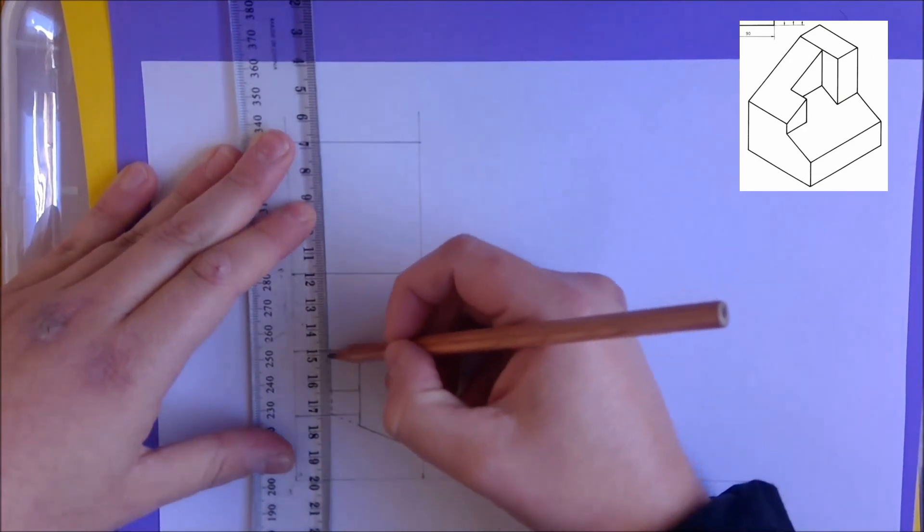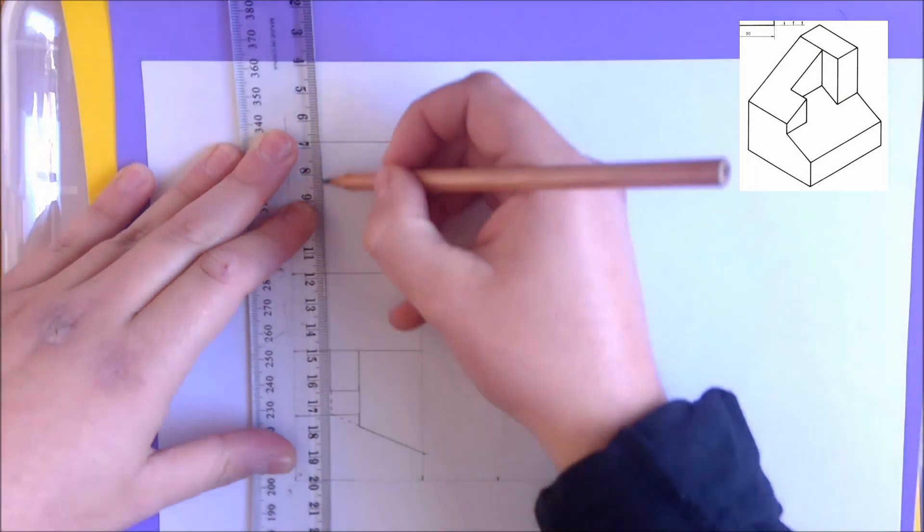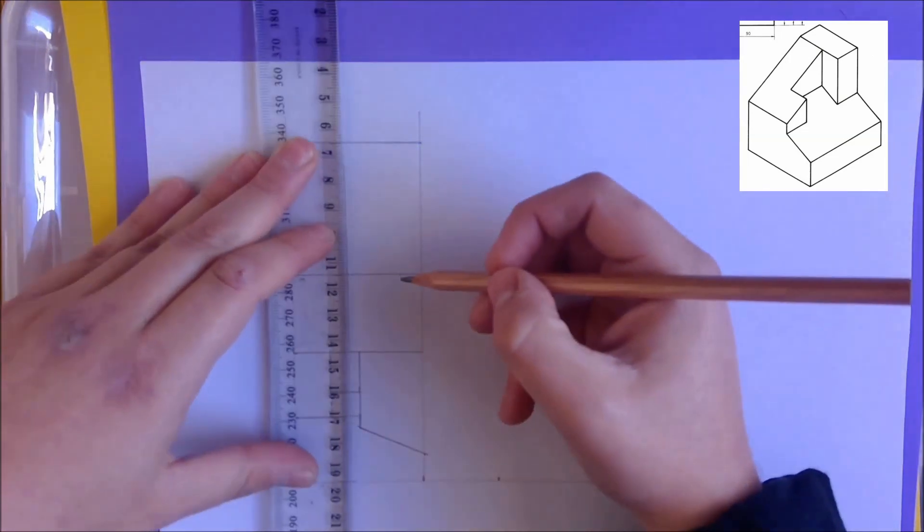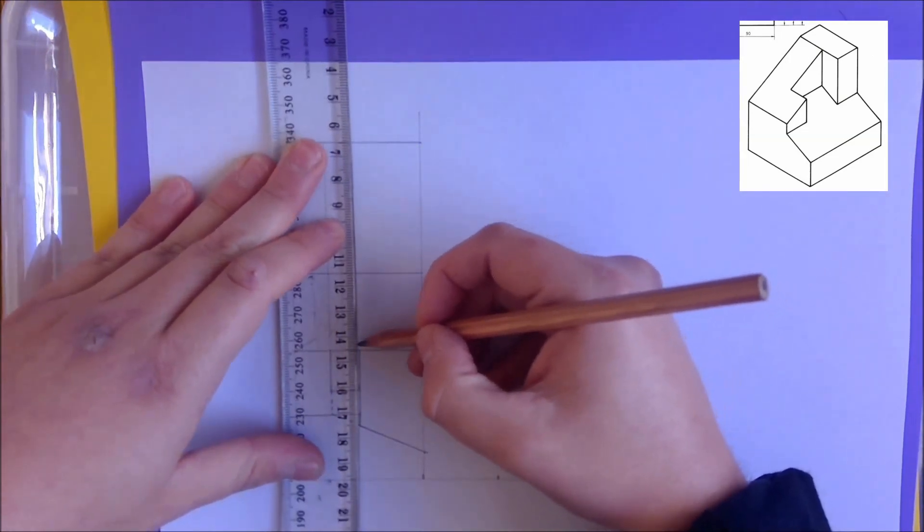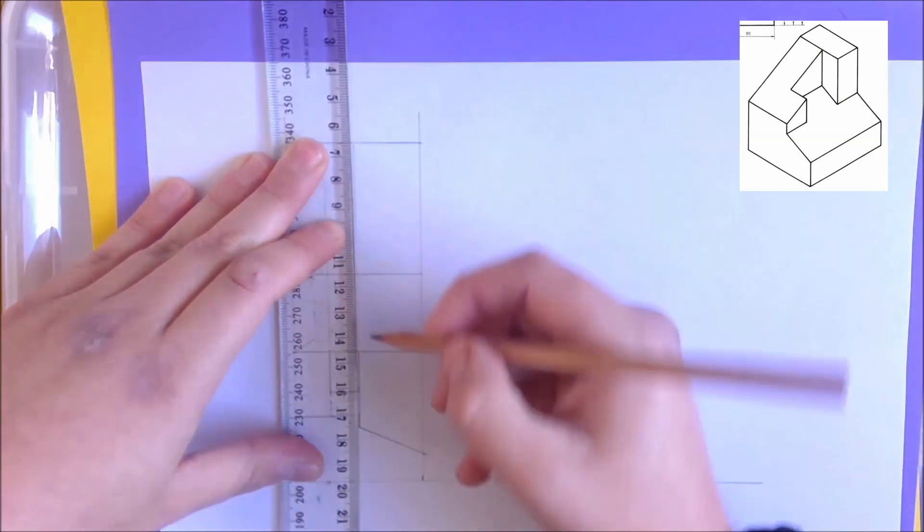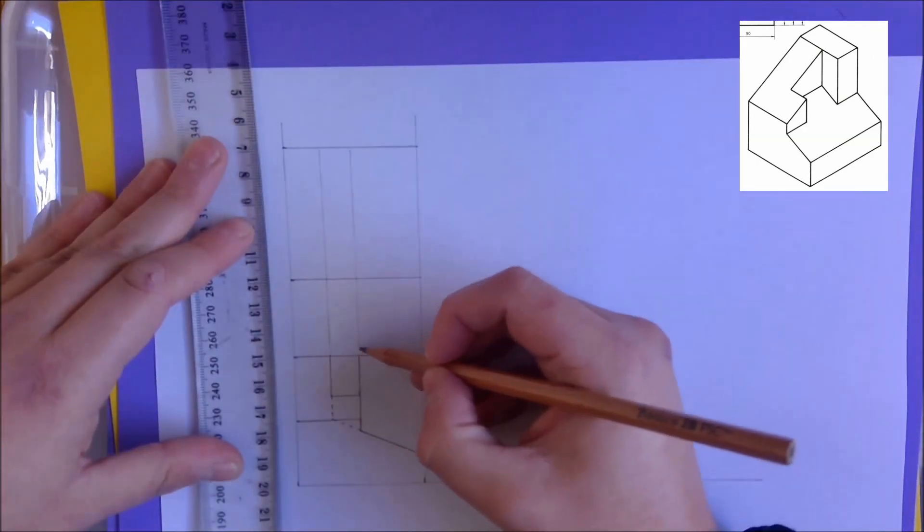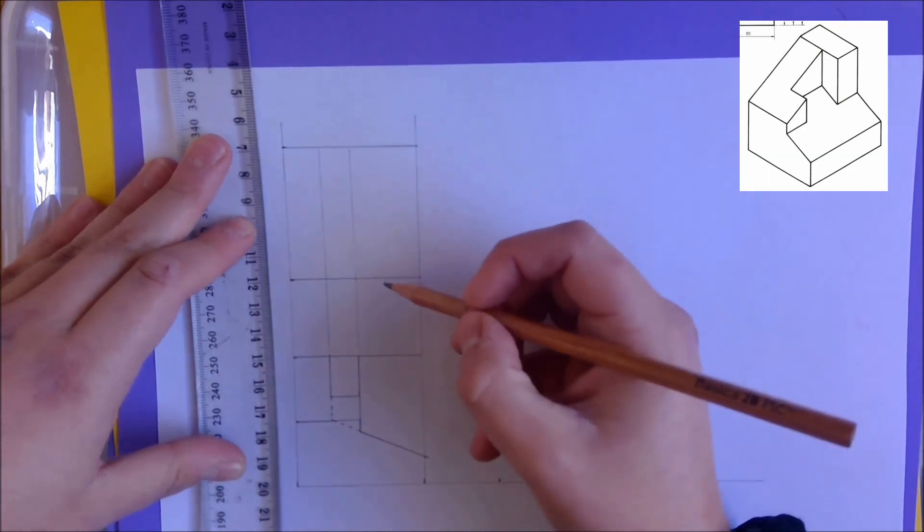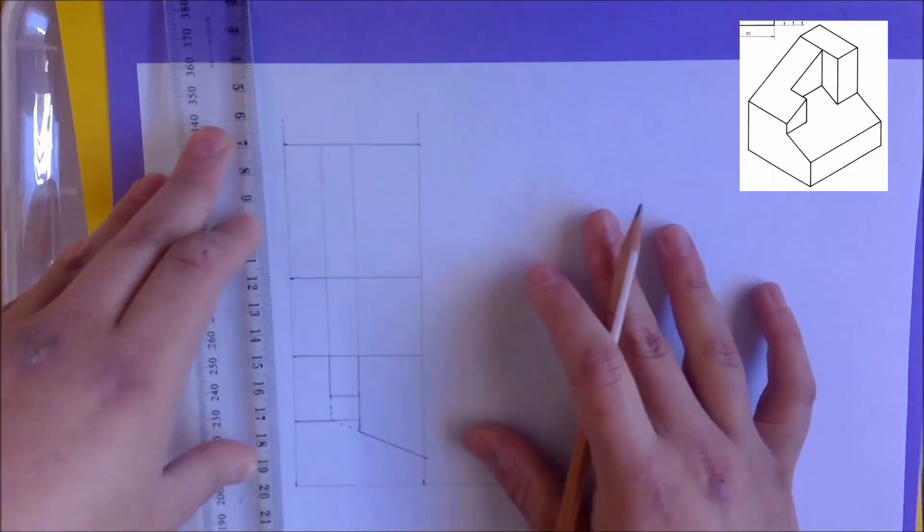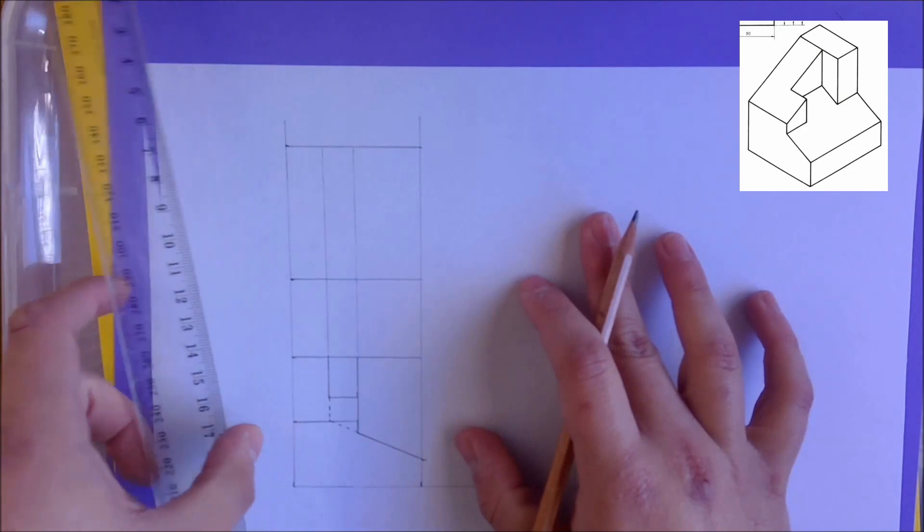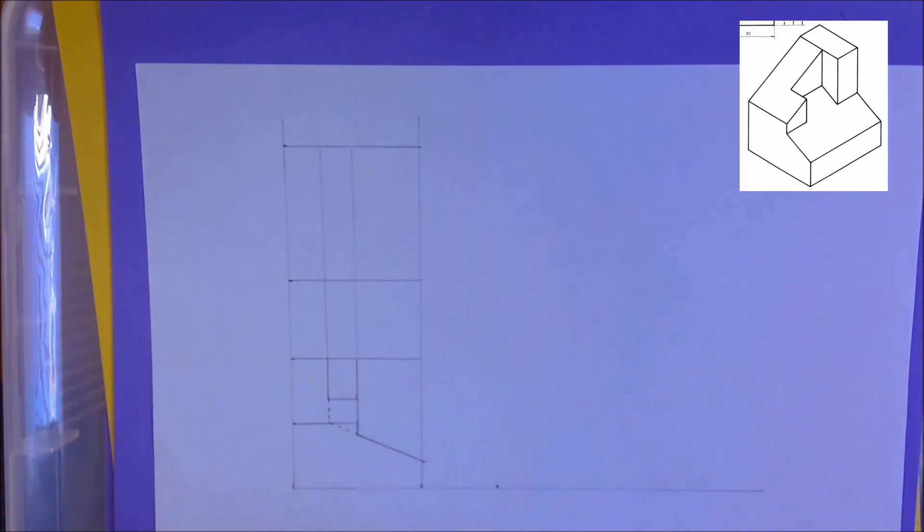So I'm going to take this line here and really lightly project it upwards, and do the same for this one here. And I lightly project it upwards. And you can see I've left a little bit of a gap here between the projection line and the actual view. And that's really something that we want to keep consistent across our drawings to keep it really nice and clean and accurate. So that's part of my top view done.